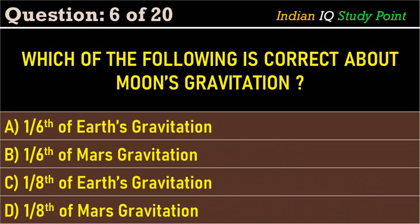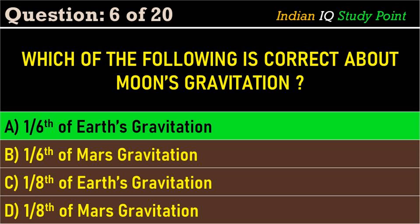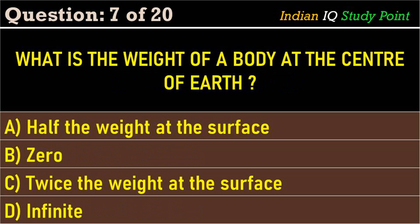Coming to the next question: which of the following is correct about the moon's gravitation? Option A: moon's gravitation is one-sixth of Earth's gravitation. Option B: one-sixth of Mars's gravitation. Option C: one-eighth of Earth's gravitation. Option D: one-eighth of Mars's gravitation. The correct answer is option A: one-sixth of Earth's gravitation.